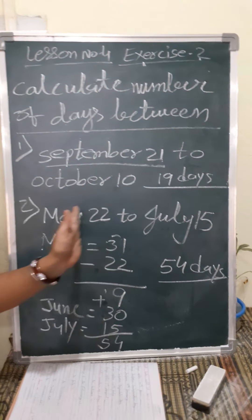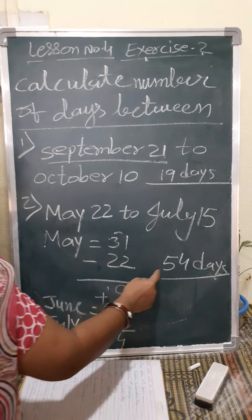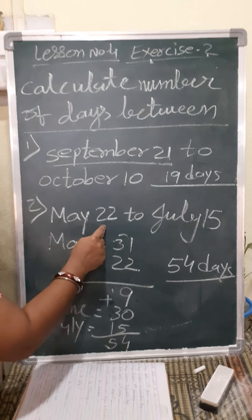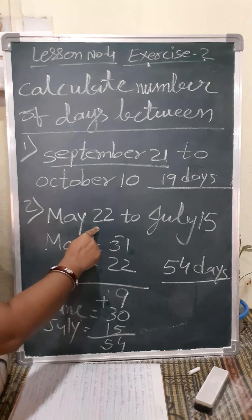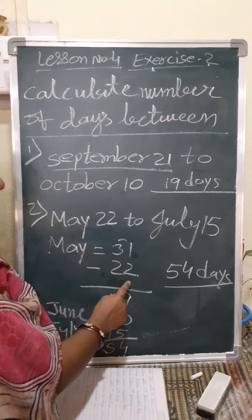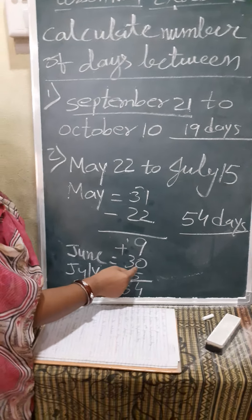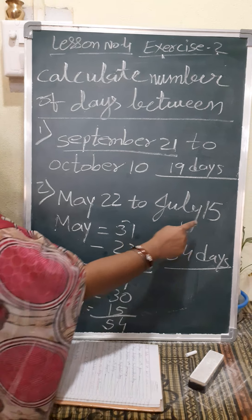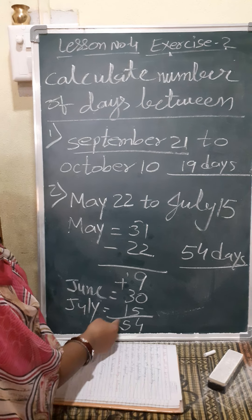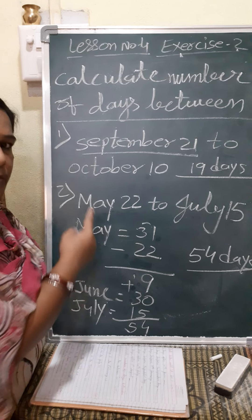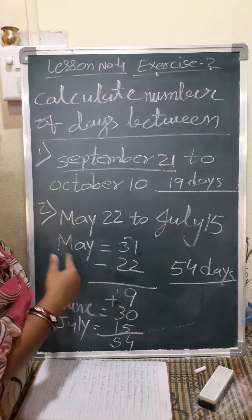So for a long duration, how to calculate the time duration in days — like this you can calculate very easily. First of all, for the starting month, write how many total days and subtract the given date. Whatever answer came, after that find the middle months — June month is between, so 30 days whole month. Then the end month, how many days given — add all together. So total came 54. In this way you can calculate. I hope you understood both the questions. Based on this I am going to give the worksheet day after tomorrow, so please solve it.